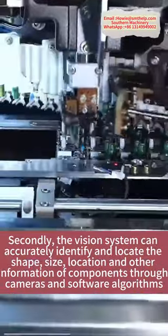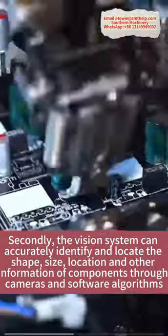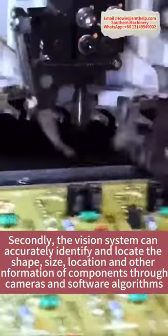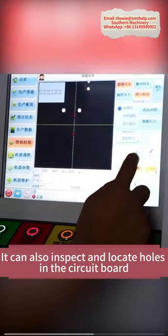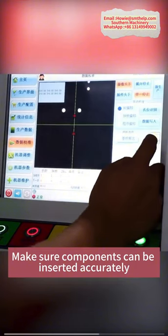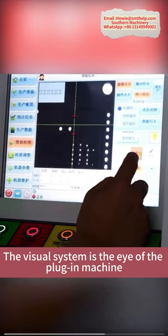Secondly, the vision system can accurately identify and locate the shape, size, location and other information of components through cameras and software algorithms. It can also inspect and locate holes in the circuit board, make sure components can be inserted accurately. The visual system is the eye of the plug-in machine.